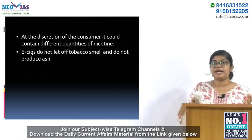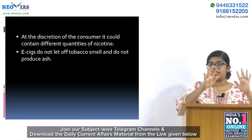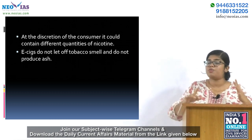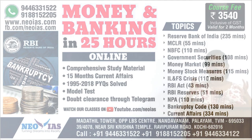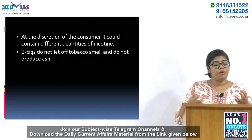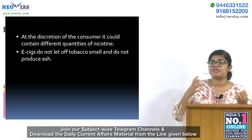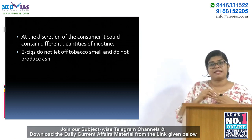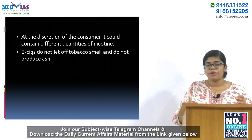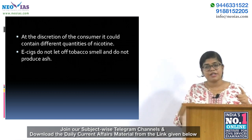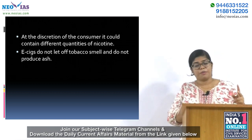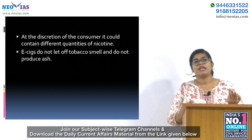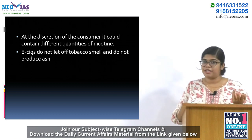Most e-cigarettes consist of three major components: a cartridge that holds the liquid solution to be vaporized, a heating device called a vaporizer, and a power source — usually a battery.